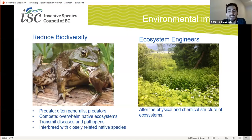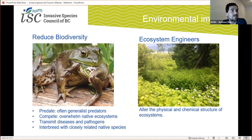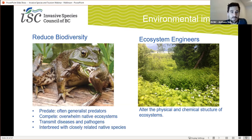One of the main impacts invasive species can have on the environment is a reduction in biodiversity — a loss of the varied critters and habitats that make BC such an attractive destination. Invasives can accomplish this in a variety of ways. Invasive species are often generalist predators and can be very detrimental to BC's native species. The American bullfrog pictured here is a generalist predator — it'll consume anything. Invasive species can also out-compete local plants for resources and quickly overwhelm native ecosystems. Some invasives like knotweed are among the fastest growing plants in the entire world. Many invasive species can transmit diseases and pathogens or even interbreed with closely related species, reducing overall biodiversity — such as the red-eared slider turtle spreading diseases to our native turtle species.